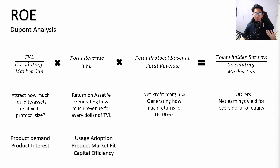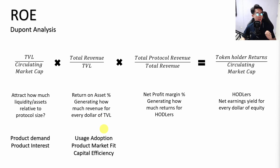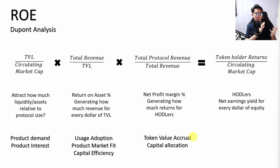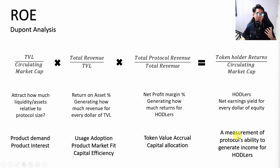The third component — total protocol revenue over total revenue — is about value accrual for token holders. Total revenue is divided between the supply side: miners, validators, liquidity providers, lenders, etc. But how much actually goes back to the token holders and governance stakers? That is the whole idea of this metric. ROE ultimately measures the protocol's ability to generate income for hodlers — the net earning yield for every dollar of equity.